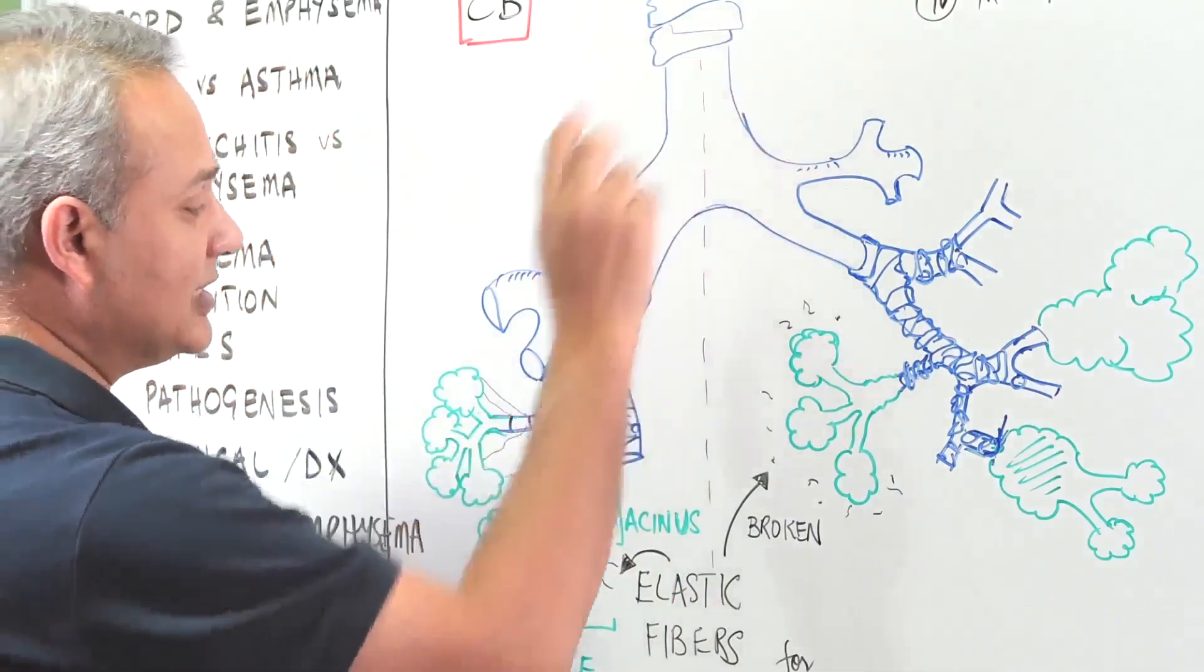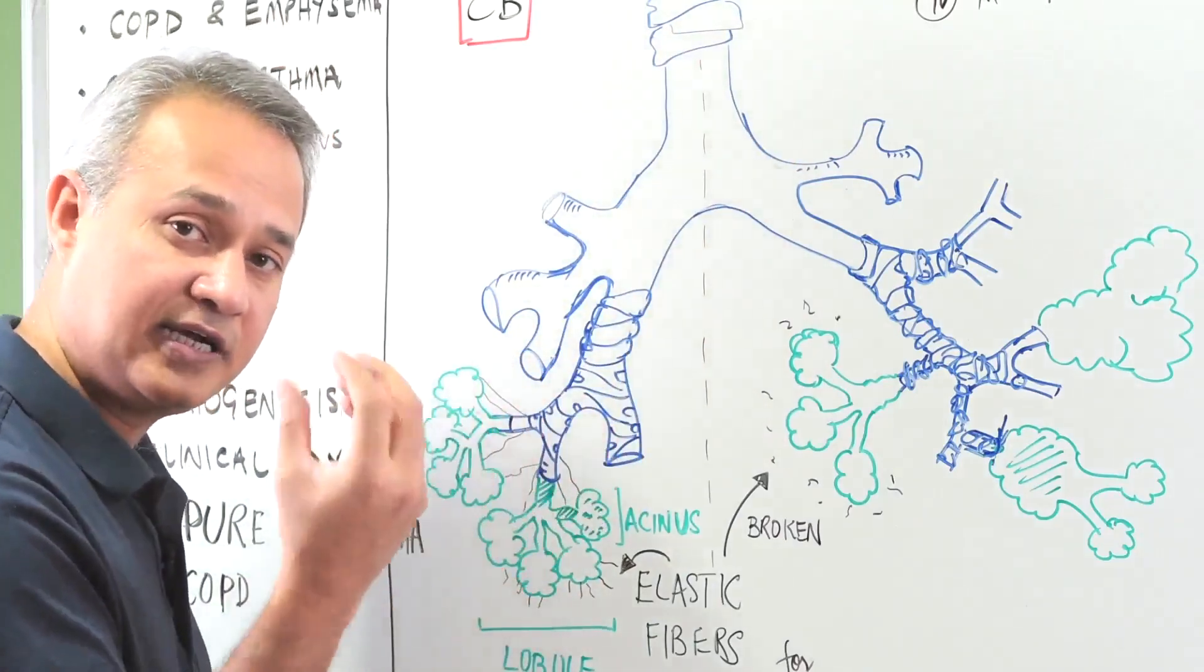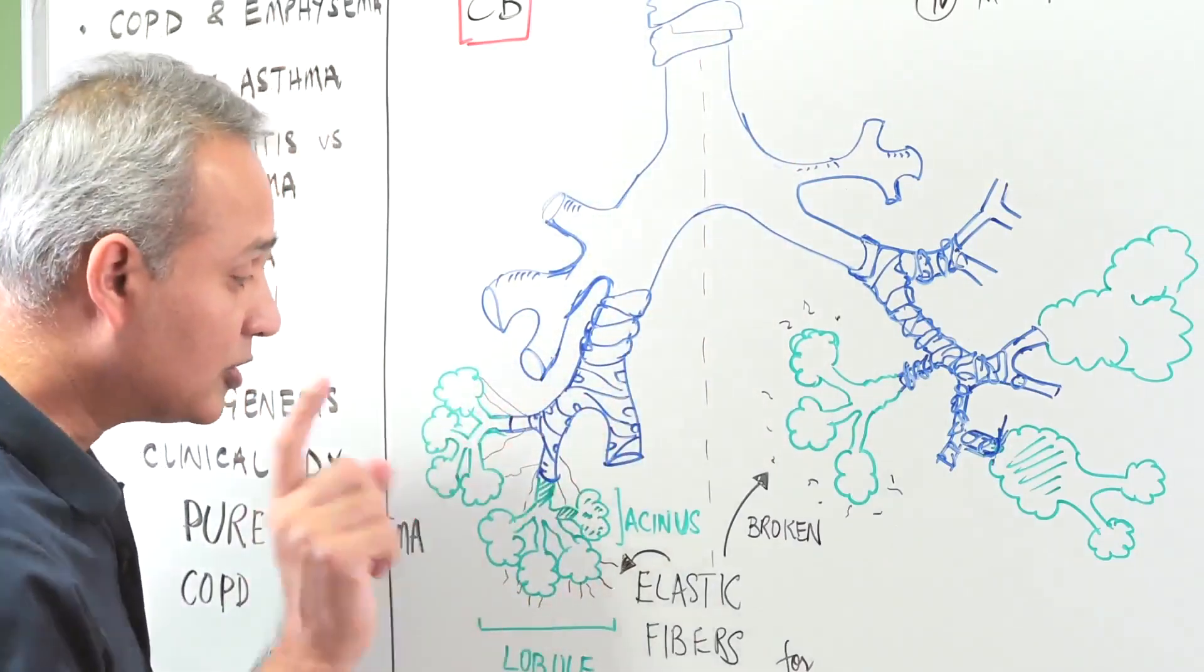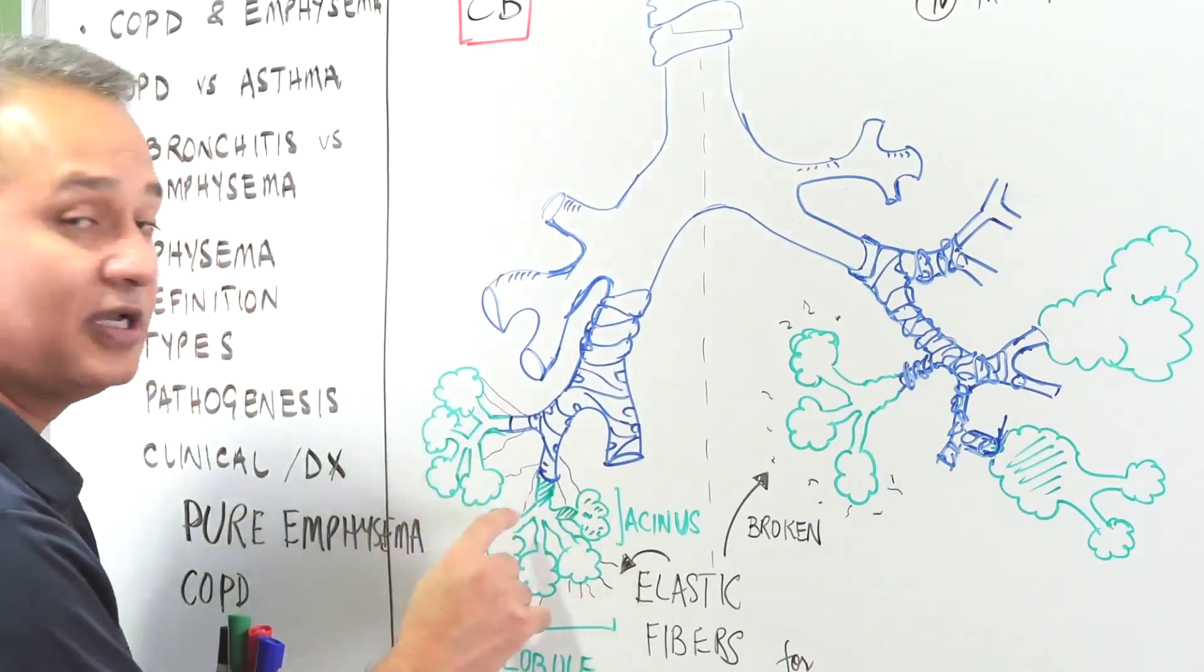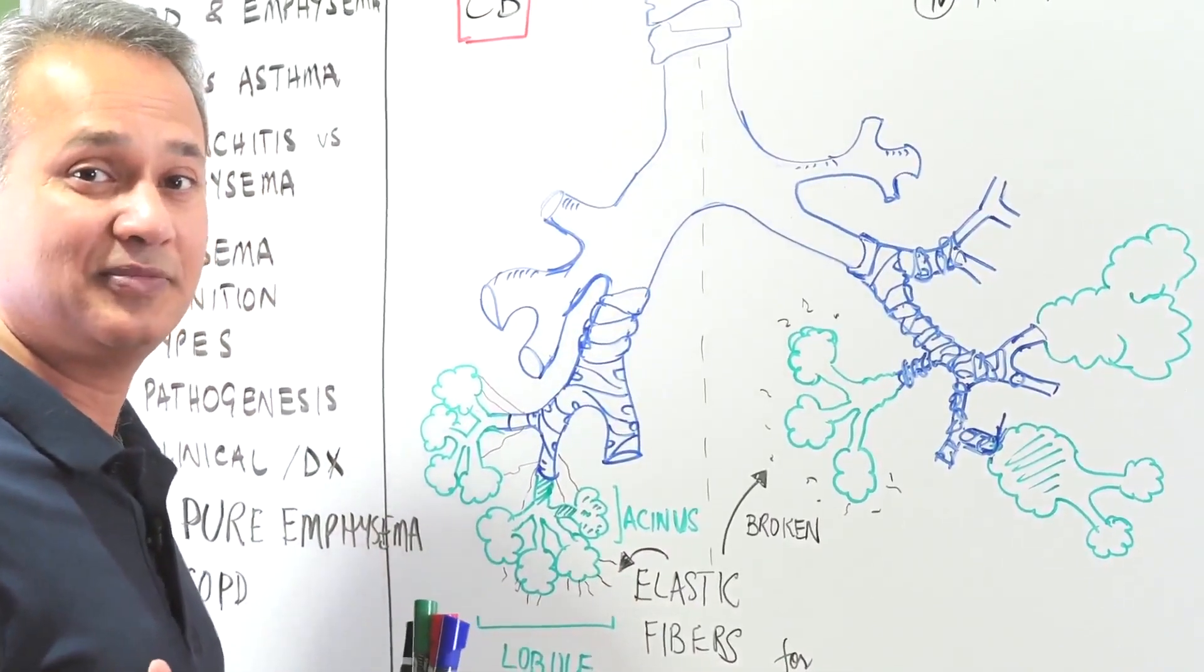However, emphysema is the same problem - destruction and dilatation of the tissue - but what tissue? The green tissue, the gas exchanging tissue, the acini and the lobule. That is the anatomical difference between them.